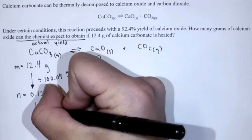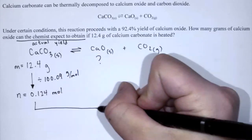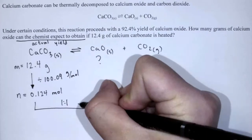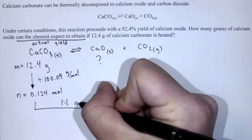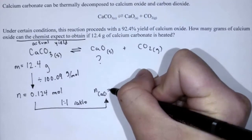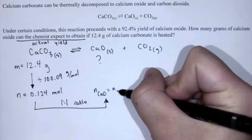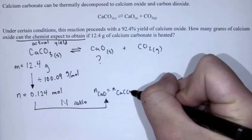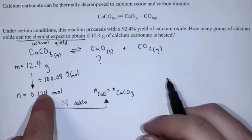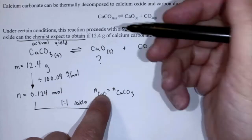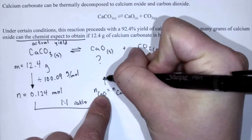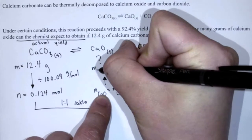It's a one-to-one ratio, which means the number of moles of calcium oxide will equal the number of moles of calcium carbonate — so it's going to be the same number. Now I just have to turn that into a mass of calcium oxide.